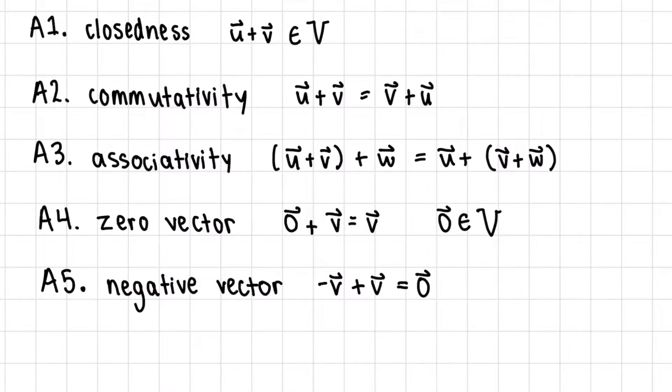For these two axioms, it matters which order you go in. You first have to identify the zero vector, then you can identify the negative vector. And of course, this negative vector has to be included in our space.